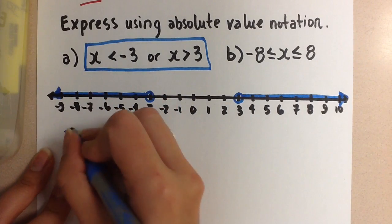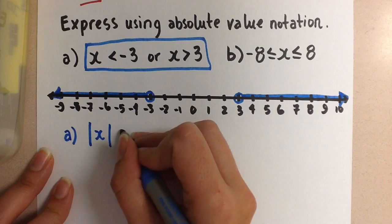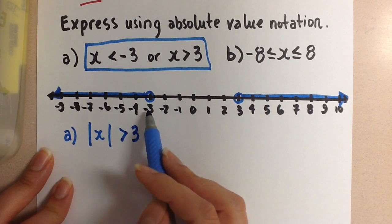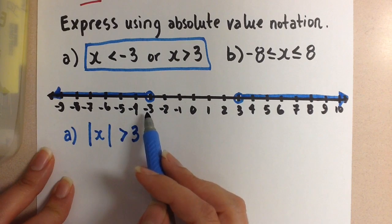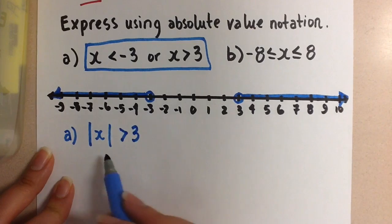So for a, if we take the absolute value of x it will always be greater than 3. Meaning the magnitude of the number, the size of the number only, ignoring the signs would be greater than 3 here and greater than 3 here.